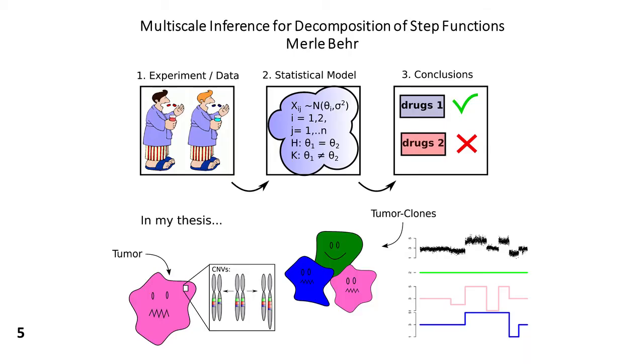Imagine you've got a tumor — for instance, this purple guy here. A really bad guy. And in genetics, this means that you have a bunch of cells in your body with some really bad mutations, like copy number variations. And of course, we want to fight this tumor. But what is the most important thing if you want to fight something? Well, the most important thing is that you know whom you are fighting. You need to know exactly how this guy looks like — what are its mutations? I can tell you that this is already a difficult task.